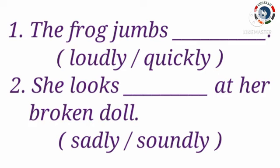Now let's see some examples of adverbs. First one: The frog jumps ___. Options are loudly and quickly. Now tell me what is the answer. Yes, quickly. Because the word quickly tells us how the action happens — quickly describes the action word 'jumps'. So the correct answer is quickly.